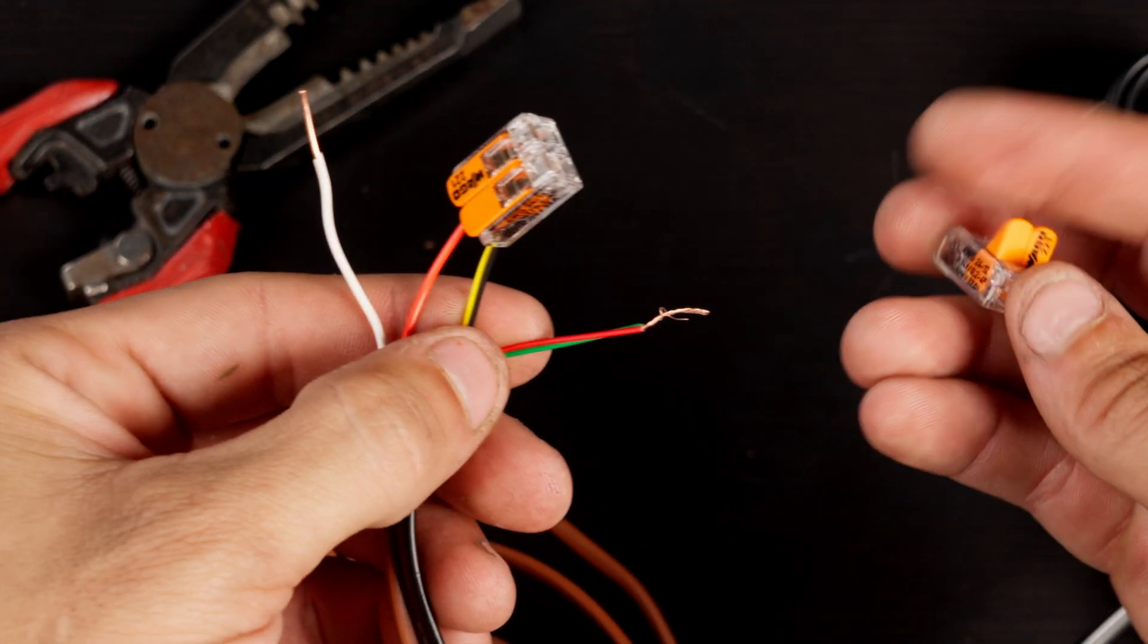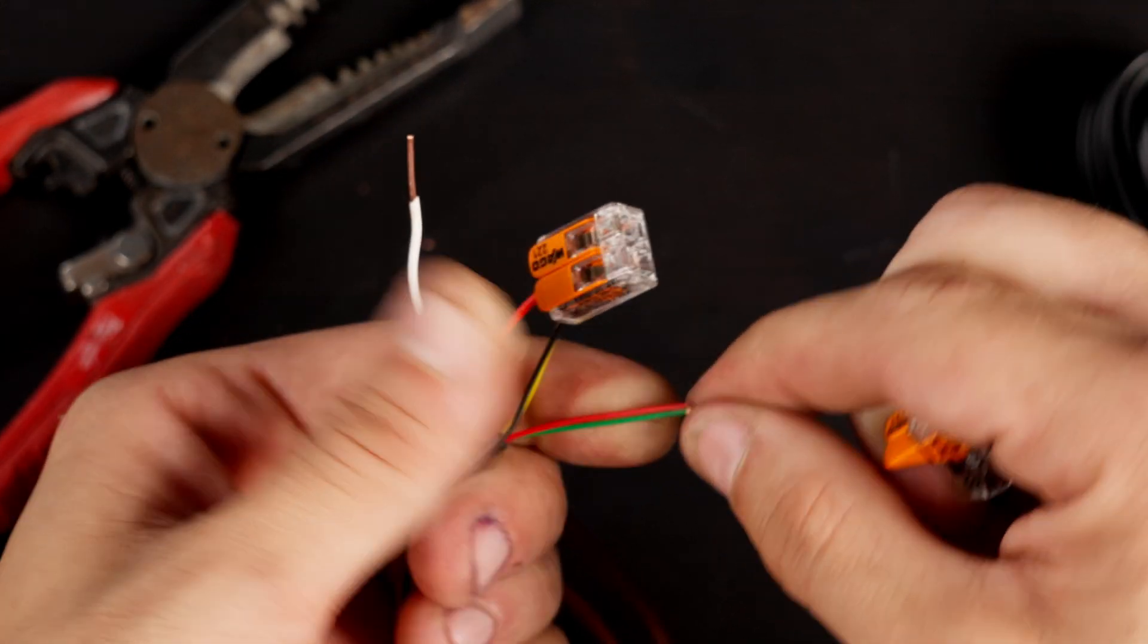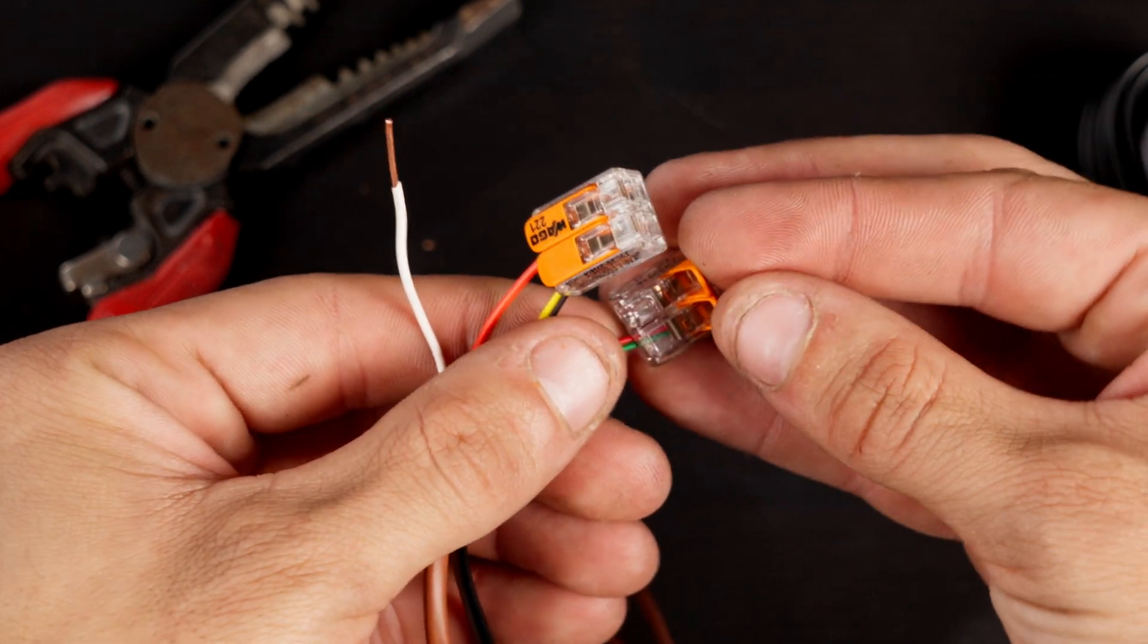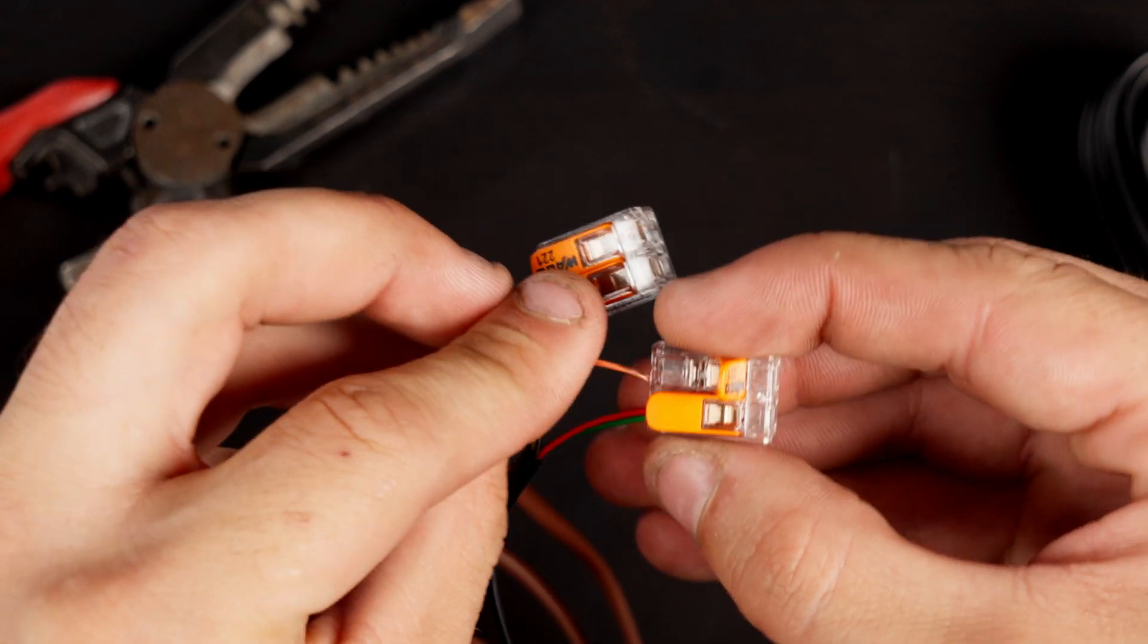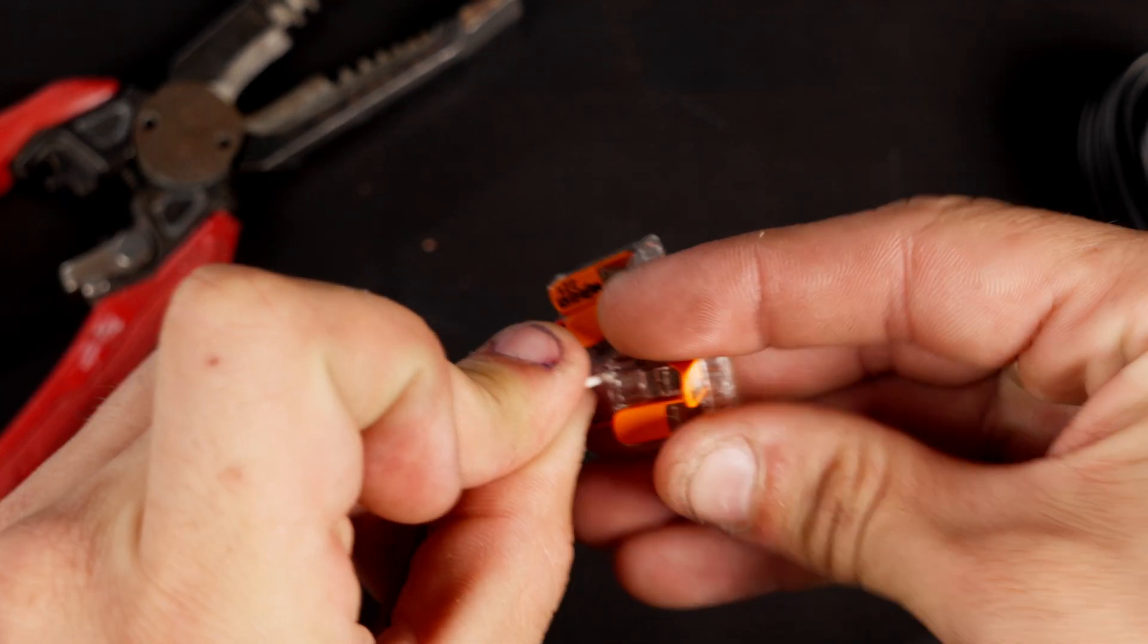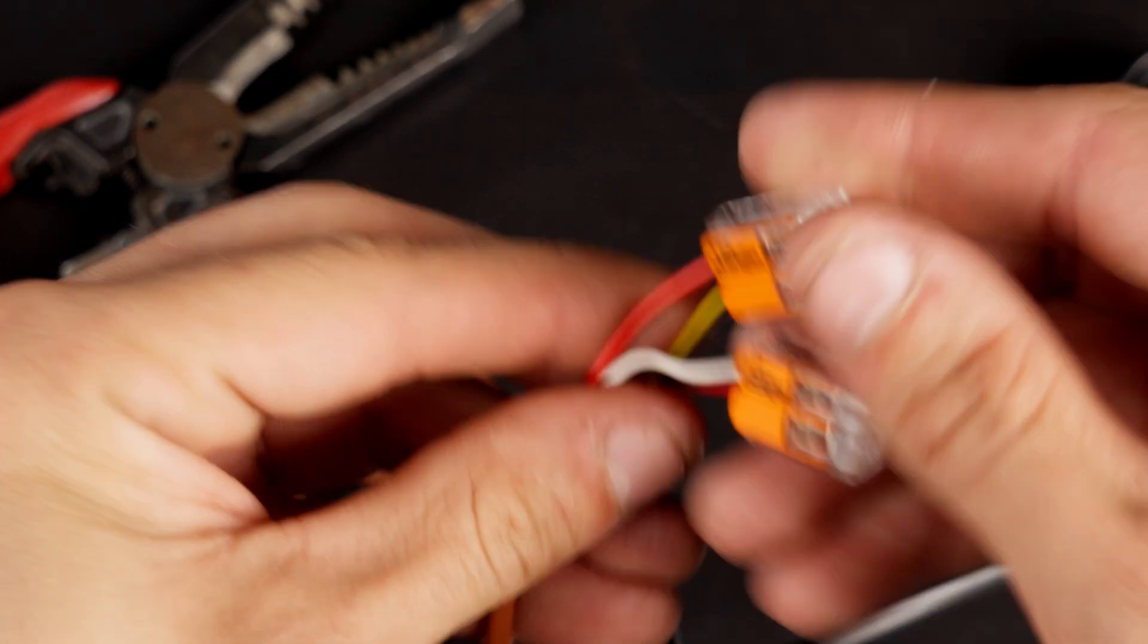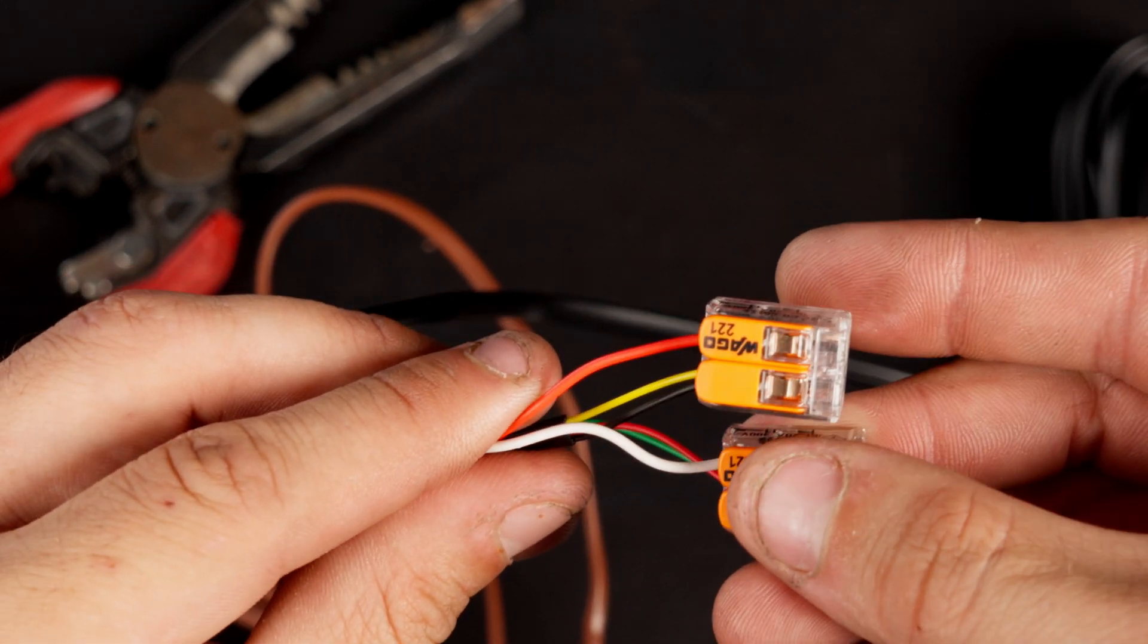Then do the same with what's going to be your power end. Take what would be your inner two wires, put them in, snap it down, nice little tug. And then same thing with your wire. Just get in there, snap, tug. There you go. Now you have your RJ11 connected to your 18-2 thermostat wire.